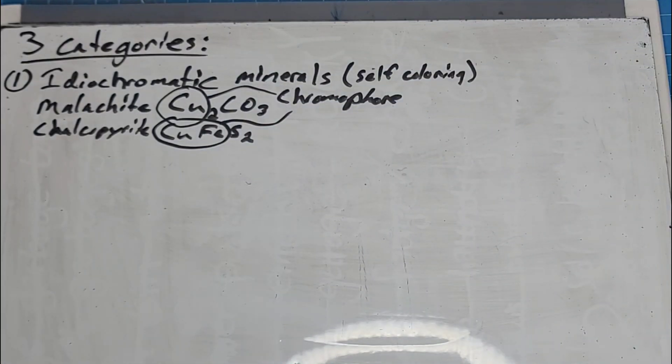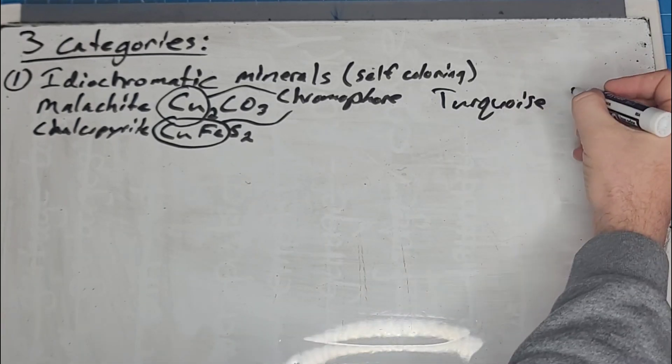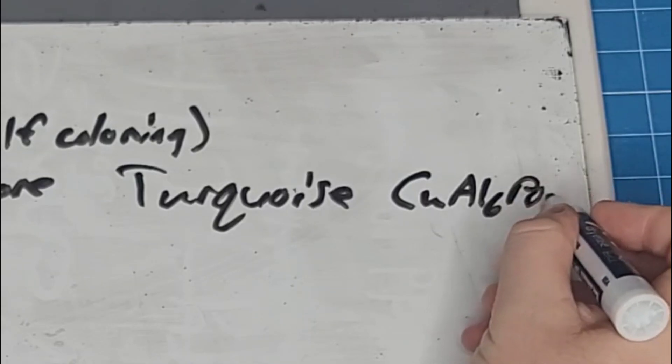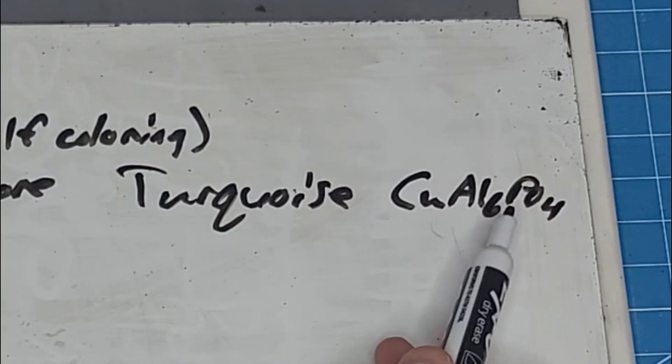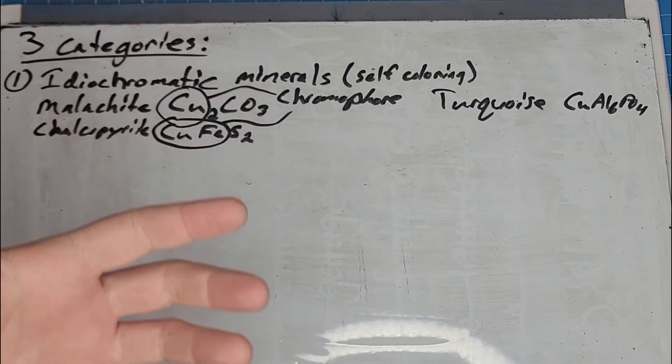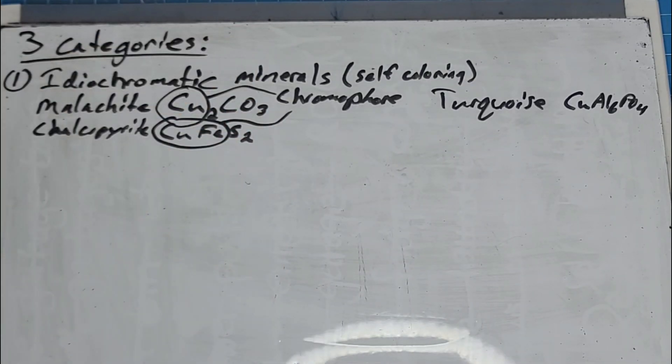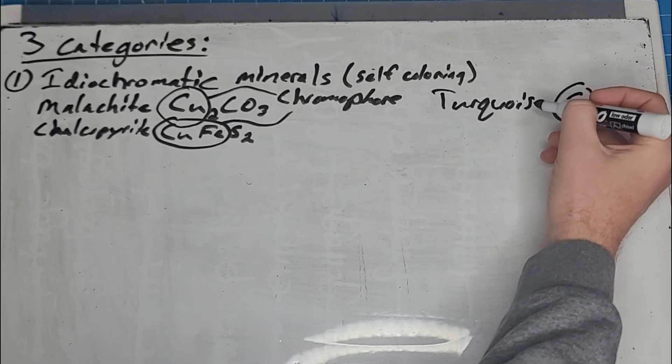Another example of an idiochromatic mineral would be turquoise. And it is another copper mineral. So its chemical formula is CuAl6(PO4)4. So it's a copper aluminum phosphate. I don't actually have an example of turquoise with me right now. But everybody knows the color of turquoise. It's got that bluish, greenish color. That's from the copper. So again, the copper is acting as the chromophore in turquoise.